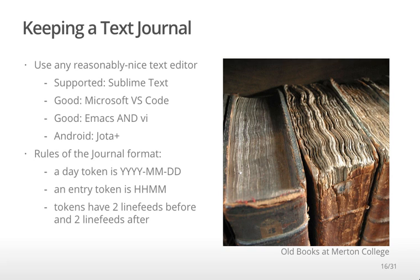You write a day using the year, the month, and the day. Anytime you have a number below 10, you have to write the leading zero. An entry is identified by the time — hours and minutes — with the same deal for leading zeros. You need to use military time, so 1 p.m. is 1300. Each time you enter the time or the date, just press Enter twice. There needs to be a blank line, and that's it. You remember how to write the day and the time and leave a blank line, and you can be creating a journal with any text editor.